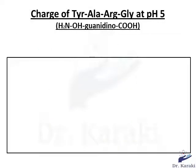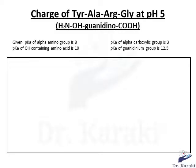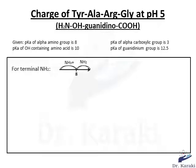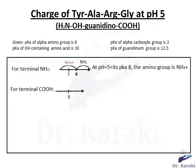Now let's determine the ionization state of each functional group at pH 5, starting with the terminal NH2. We draw an axis. On the middle of it we put the pKa of the amino group, which is 8. On the left side we have the protonated form, the ammonium. On the right side we have the unprotonated form, NH2. Since 5 is lower than 8, the amino group is NH3+.